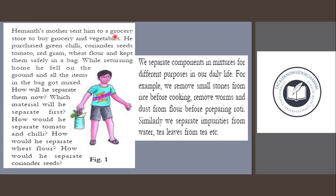Hamel's mother sent him to a grocery store to buy groceries and vegetables. He purchased green chili, coriander seeds, tomato, red gram, and wheat flour, and kept them safely in a bag. However, all the items started to mix together. How will he separate them now? Which material will he separate first? How would he separate tomato and chili? How would he separate wheat flour and coriander seeds?